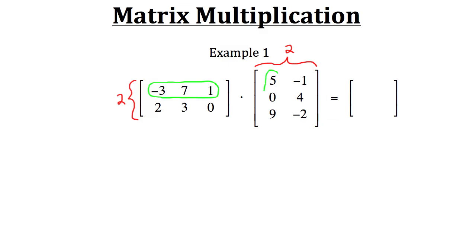For example, if we take the first row in our first matrix and multiply it by the first column in the second matrix, we'll get a result for the element in the first row and first column of our resulting matrix — because we use the first row from our first matrix and the first column from our second matrix, so the result will be in the first row, first column. Now how do we actually do the multiplication?